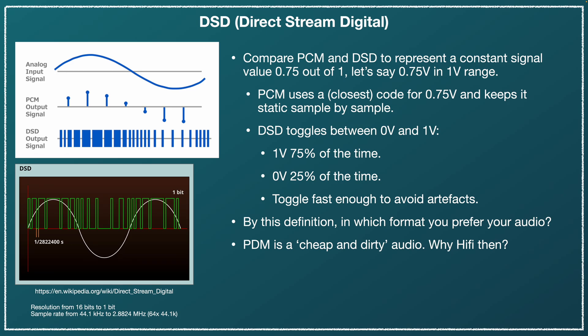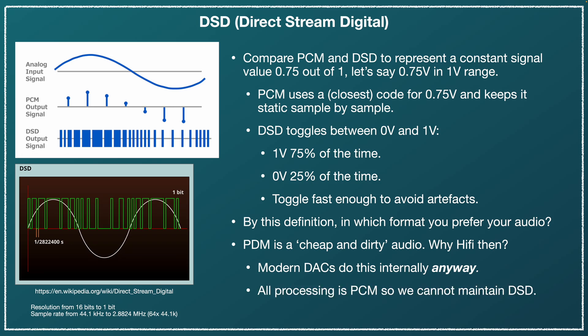So why do we use this in hi-fi? The catch is that modern DA and AD converters do this anyway — sigma-delta modulation happens inside the converter regardless, even if you put in a 32-bit PCM signal. So the argument is that when you use a DSD signal, you're just doing this before the converter, while it would do it anyway. It's worth mentioning though that all kinds of processing — EQ, even volume control, any DSP — everything is done in PCM. So you cannot just maintain the DSD signal throughout the whole signal chain.